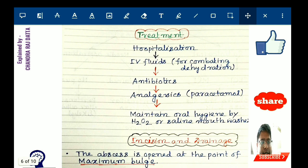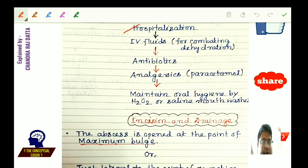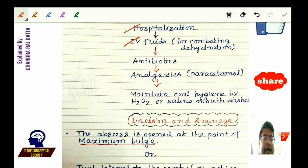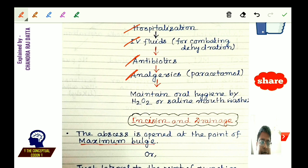In treatment, the patient should first be hospitalized. IV fluids are given to combat dehydration, since the patient cannot swallow due to odynophagia. IV antibiotics are given to combat infection. Analgesics such as paracetamol are given for pain and fever relief. In some cases of peritonsillar abscess, higher analgesics like pethidine are also given.